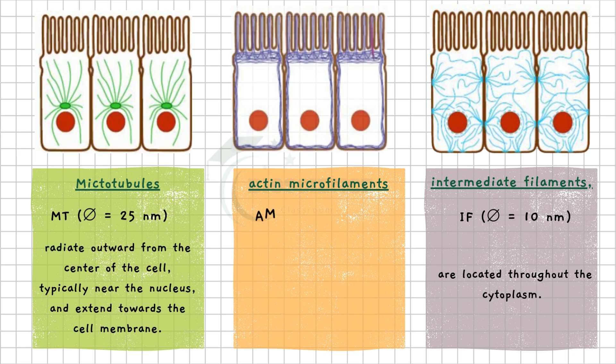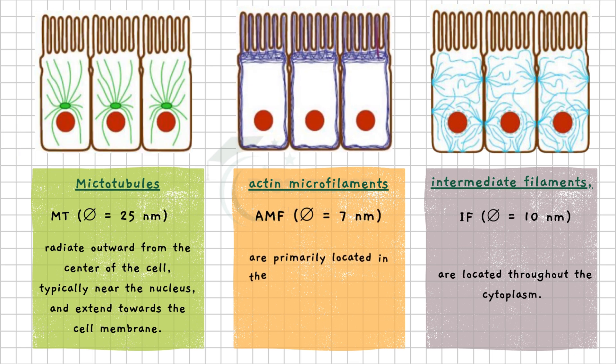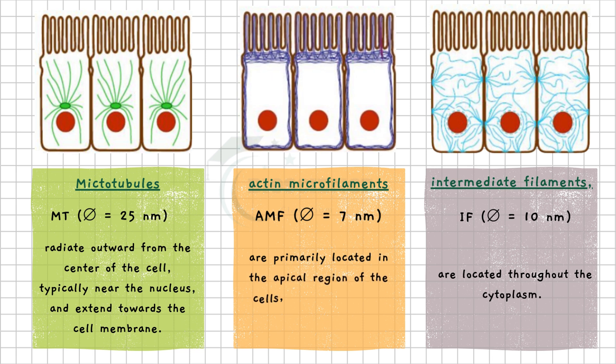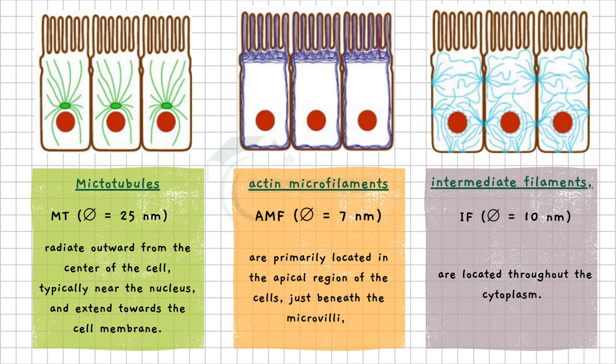As for the actin microfilaments, they are primarily located in the apical region of the cells, just beneath the microvilli, structures that increase the cell's absorption surface. They have a diameter of 7 nanometers.